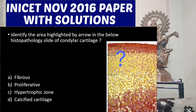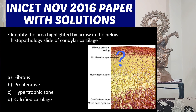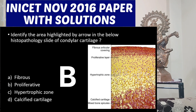The third question is image-based: identify the area highlighted by the arrow in the histopathology slide of condylar cartilage. Option A: fibrous, Option B: proliferative, Option C: hypertrophic zone, Option D: calcified cartilage. The right answer is Option B, the proliferative layer. There are four layers: the fibrous layer (uppermost), the proliferative layer, the chondrocytic cell layer, and the hypertrophic cell layer.